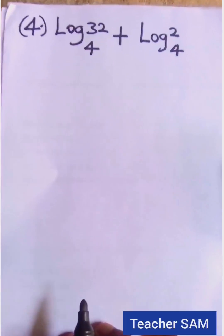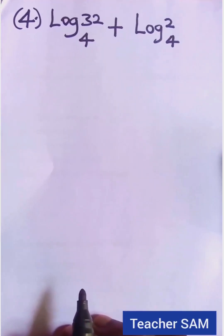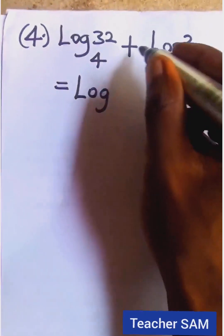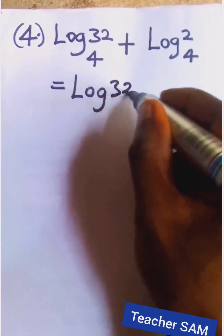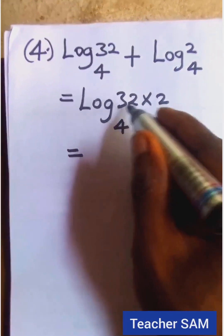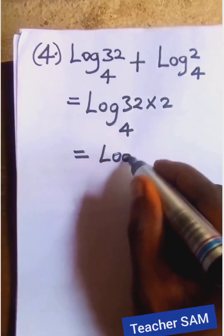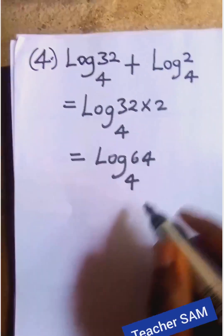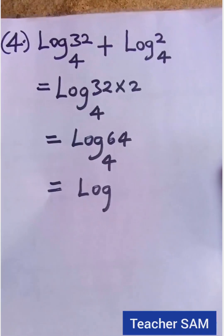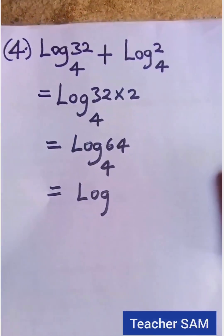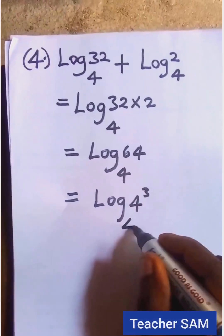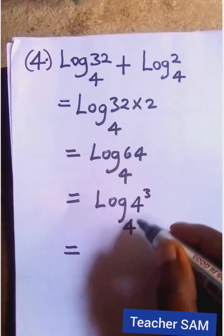Question four: log 32 to base 4 plus log 2 to base 4. Applying the laws we have learned, whenever there is addition we multiply the arguments, so that becomes log of 32 times 2 to base 4. 32 times 2 is 64, so we have log 64 to base 4. Now we can simplify further — 64 is the same as 4 raised to the power 3.